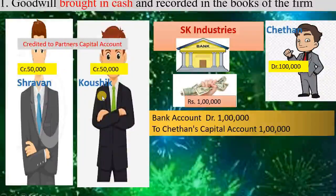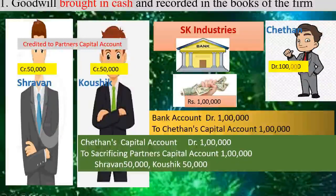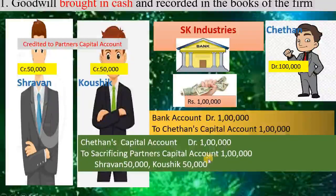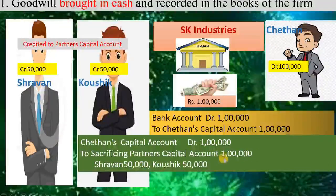Our entry is Chetan's capital account debit 1 lakh rupees — he has received the advantage of goodwill, so debit the receiver. Chetan's capital account debit to sacrificing partners' capital accounts, that is to Shravan's capital account and to Kaushik's capital account. If we consider these two partners as equal partners who equally sacrifice their shares, then 1 lakh rupees at 50% goes to Shravan and 1 lakh rupees at 50% goes to Kaushik.